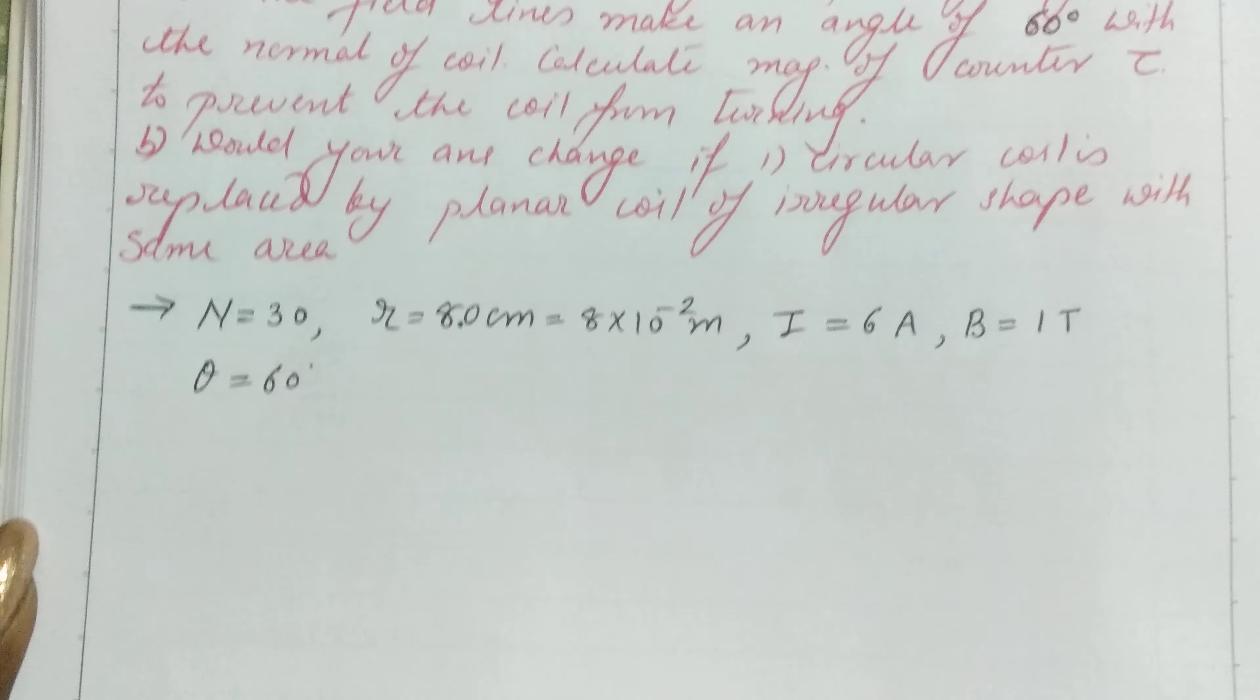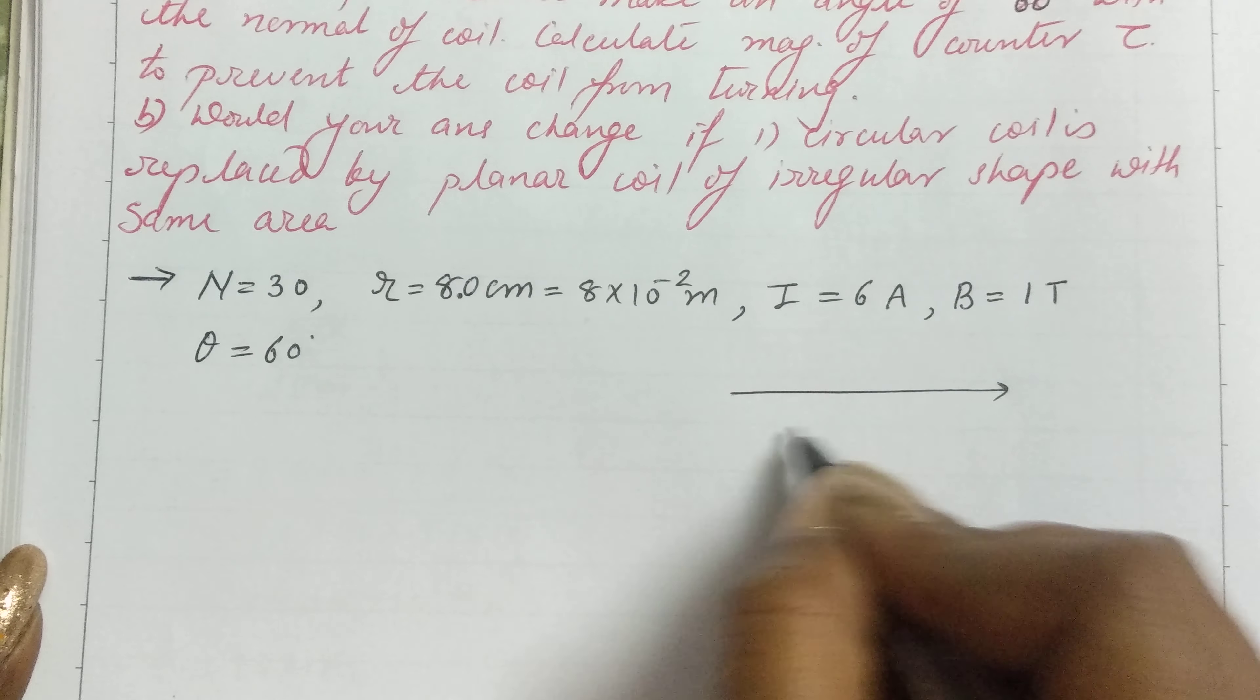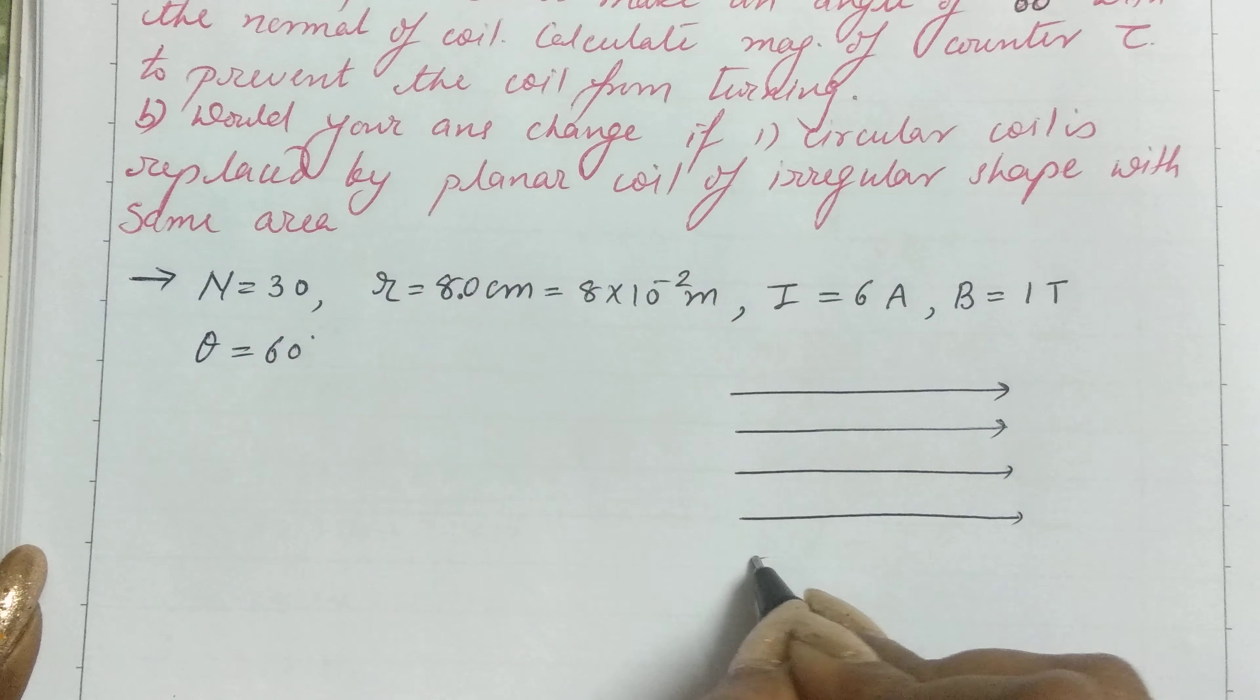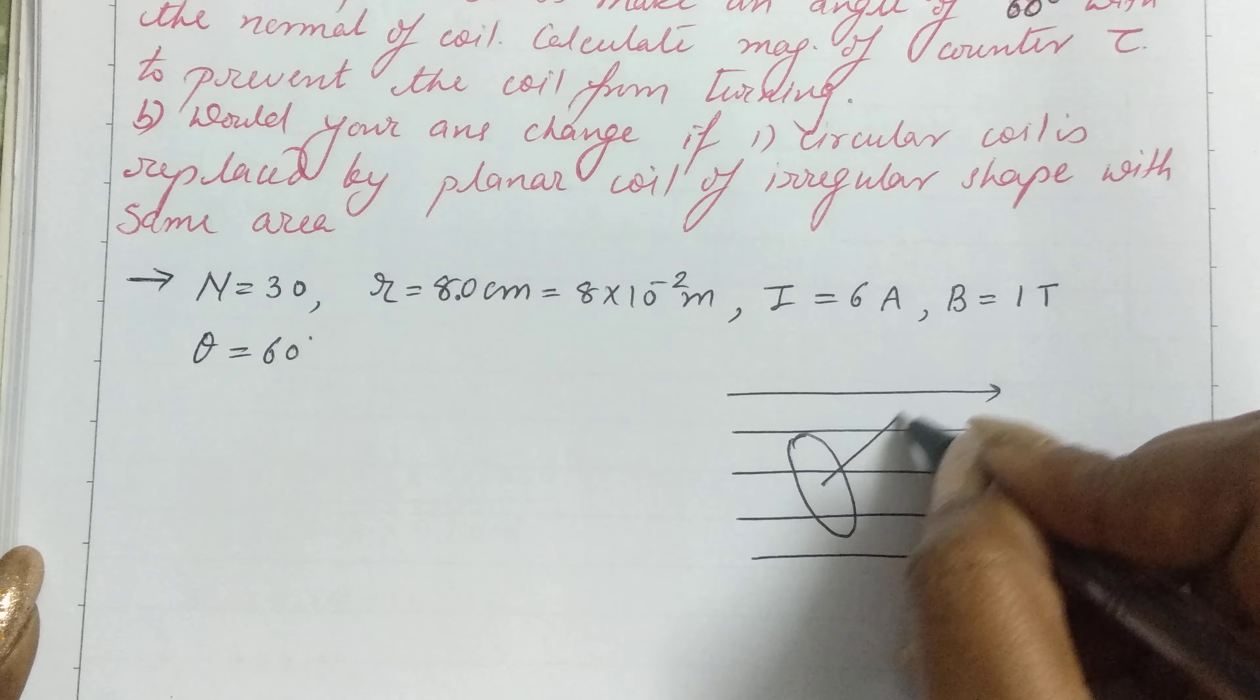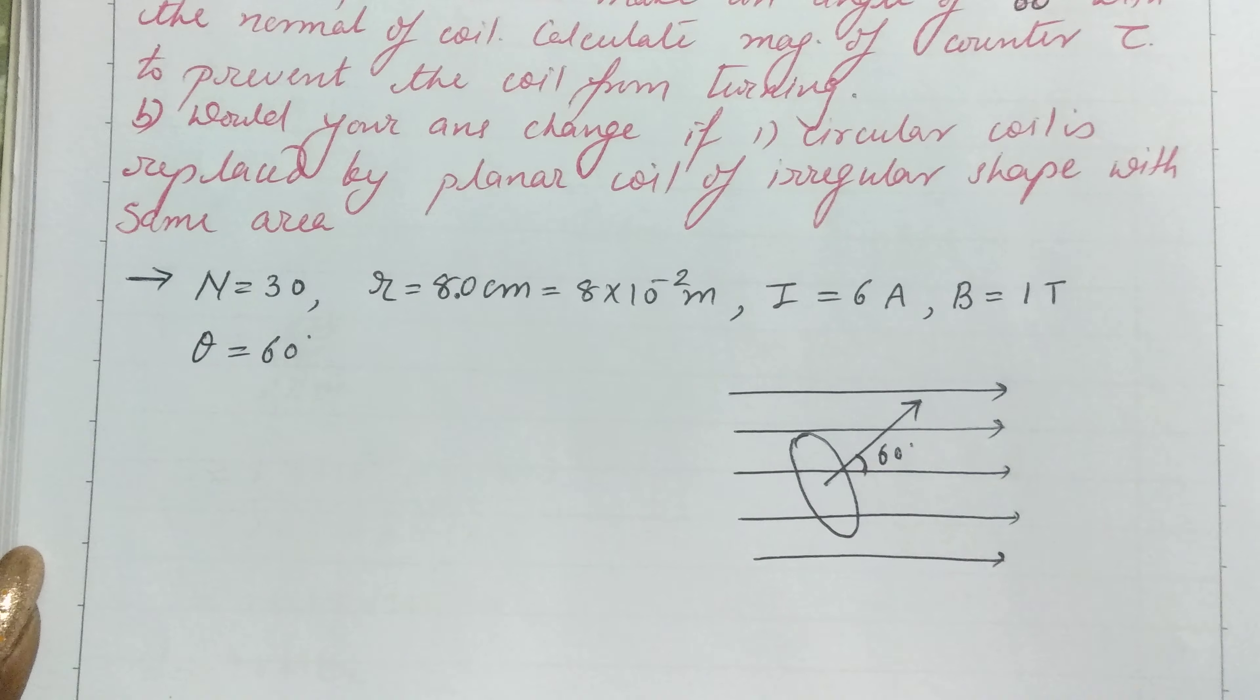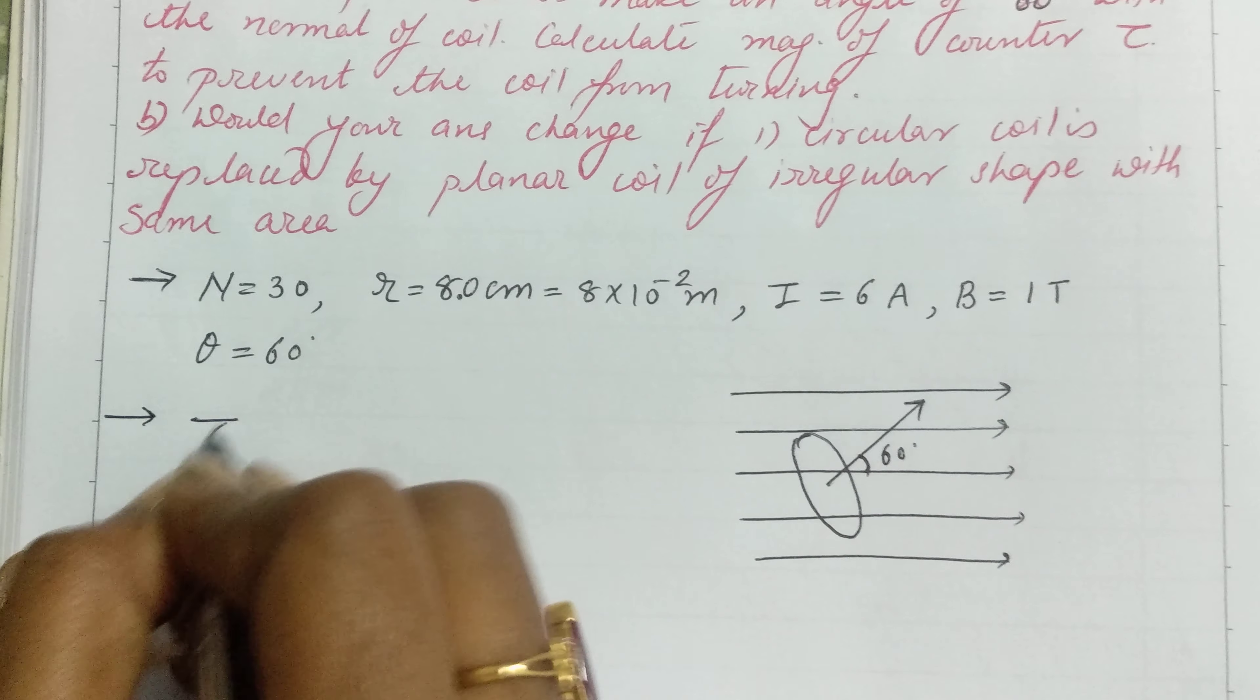If we draw the figure: suppose this is the magnetic field and this is the coil. If this is the normal, then this angle will be 60 degrees. Now, using the formula for torque...